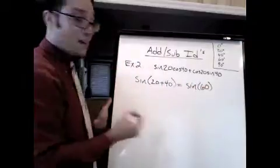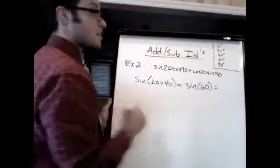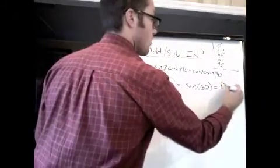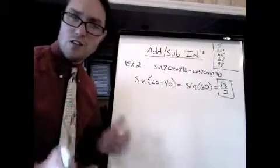That's a famous angle. I know from the unit circle that the sine of 60 degrees is radical 3 over 2. And that's my final answer. So that's equal to that because of the trig identity. How simple?